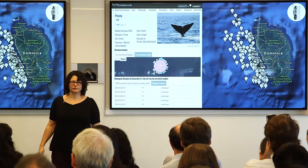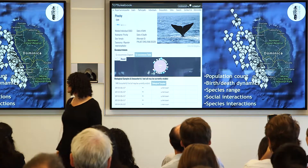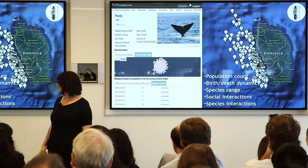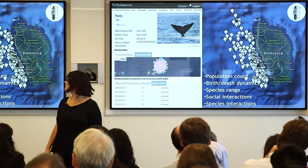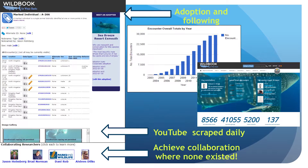We can do population counts, birth-death dynamics, species range, social interactions, and species interactions — all through photographs. Here is another Wildbook, for whale sharks — the oldest one. Not only can you now adopt a whale shark, but all contributors — whether citizen scientists, tourists, divers, or actual researchers studying the species — can figure out that they've all seen the same animal and start interacting. You can ask questions of scientists, and scientists can ask back what was happening when the pictures were taken.